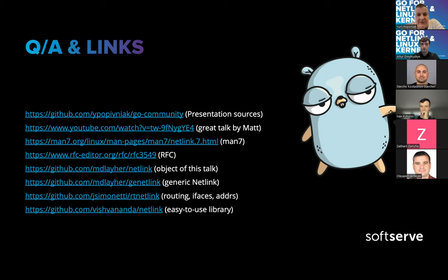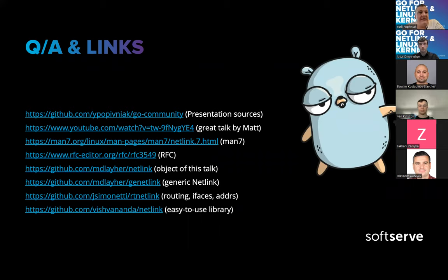On whether Netlink can be used for IPC between user space processes: I think it could be used, because it's like a bus inside the Kernel, but I've never tried communicating between two user space processes that way — though I believe it's possible. On whether Netlink is Linux-only: I think so. I haven't seen any implementations for other operating systems. At first I thought it might work on POSIX systems, but I've never tried it on OpenBSD, FreeBSD, or macOS, and I don't think it would work there.